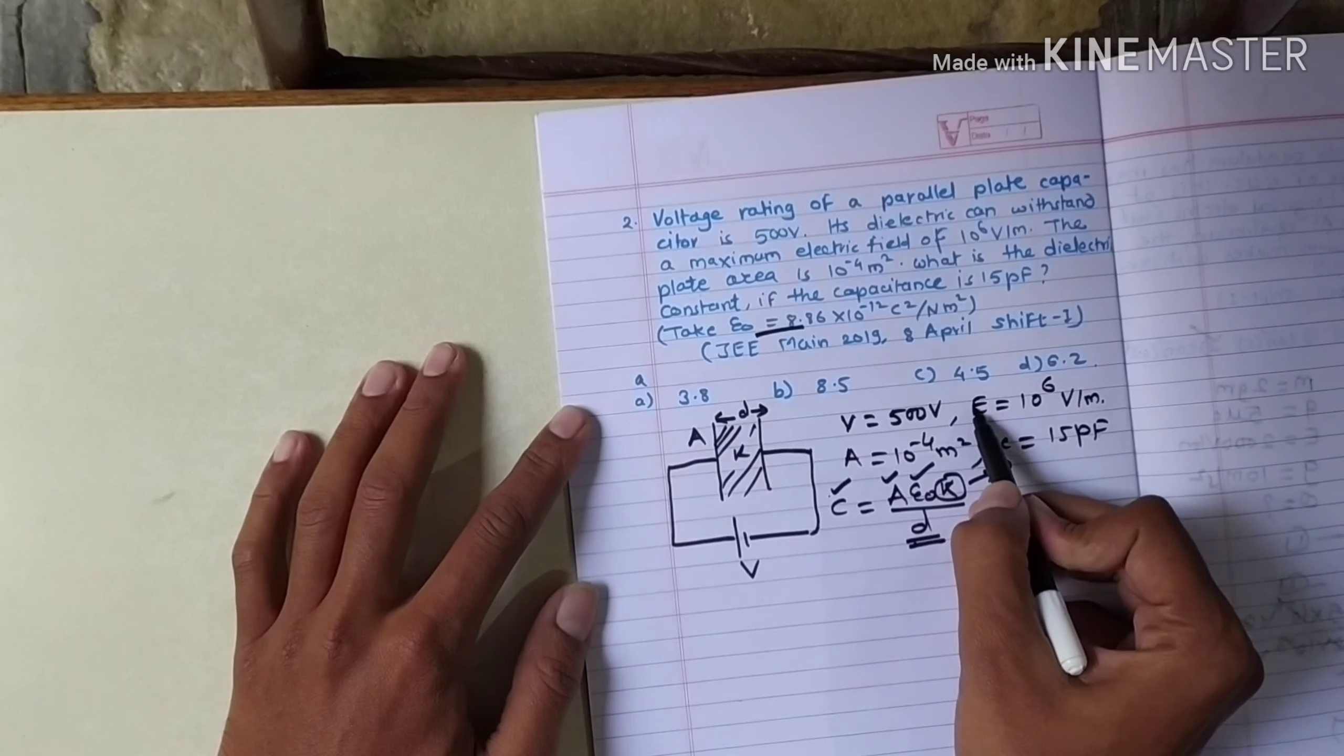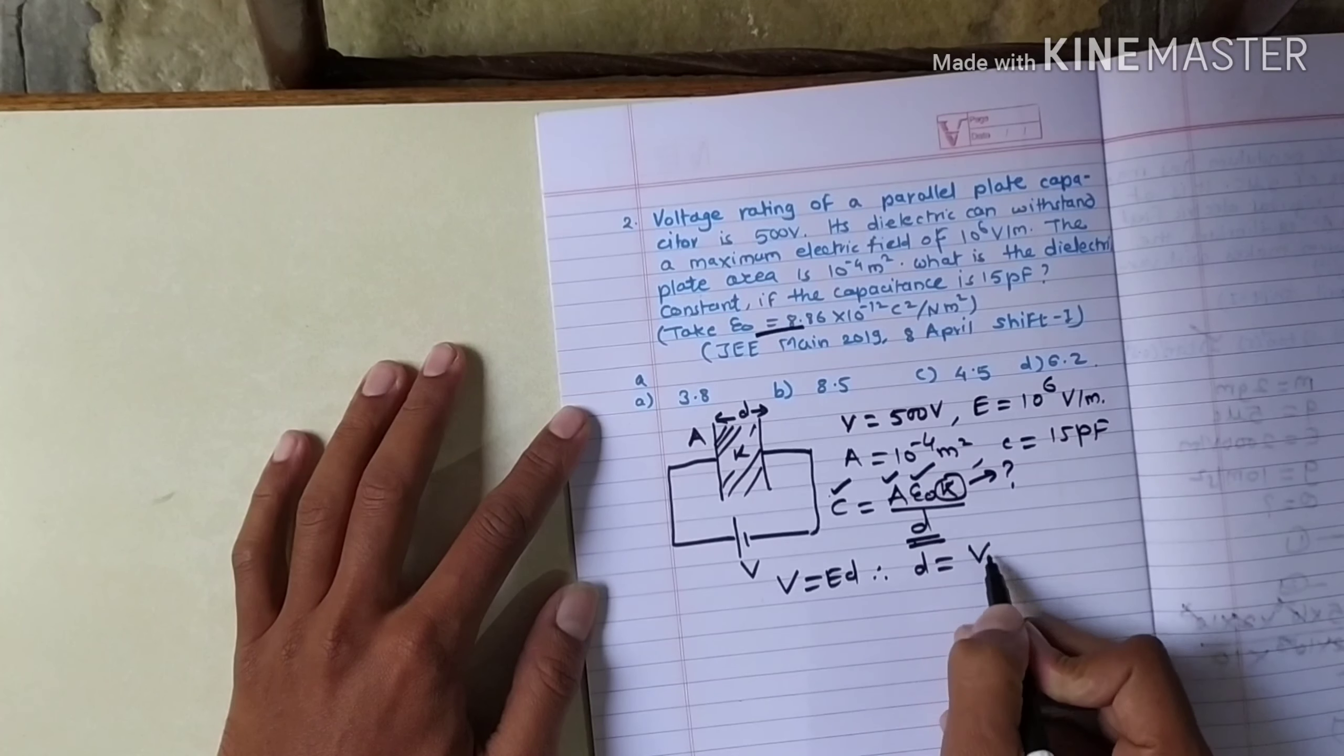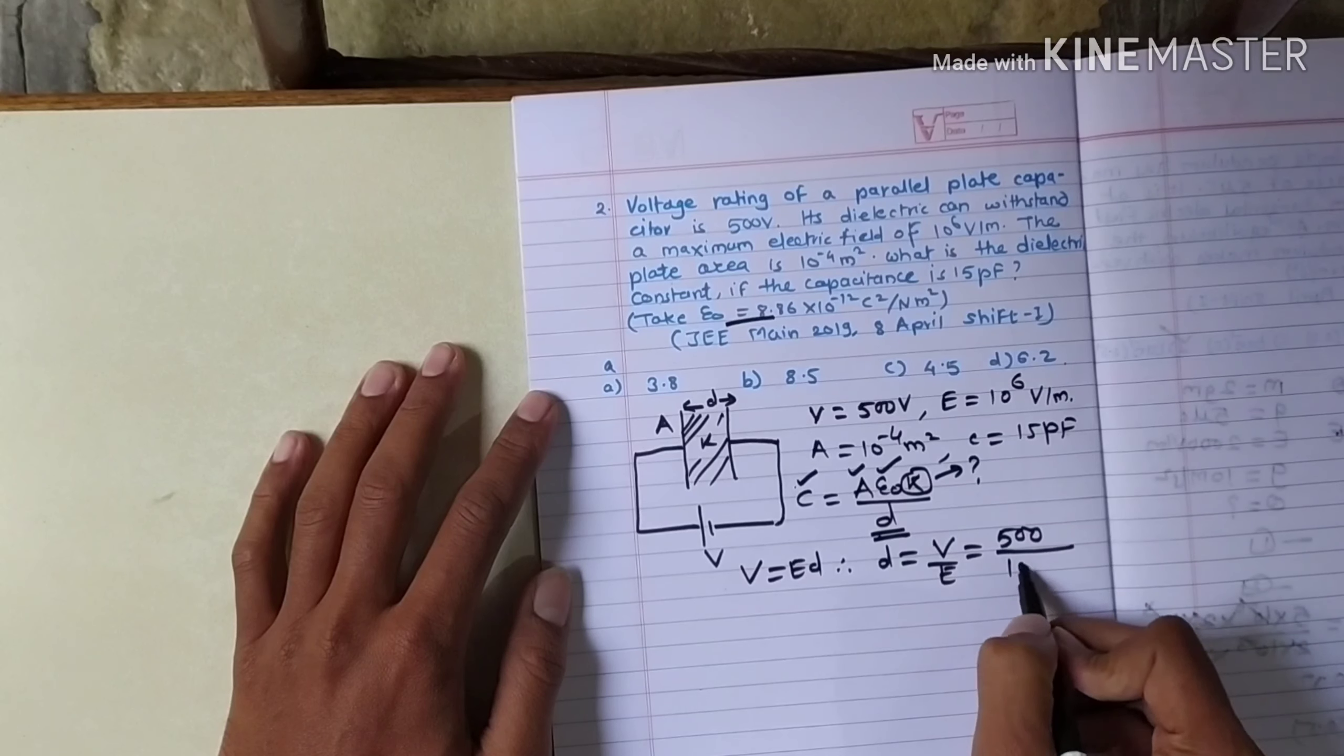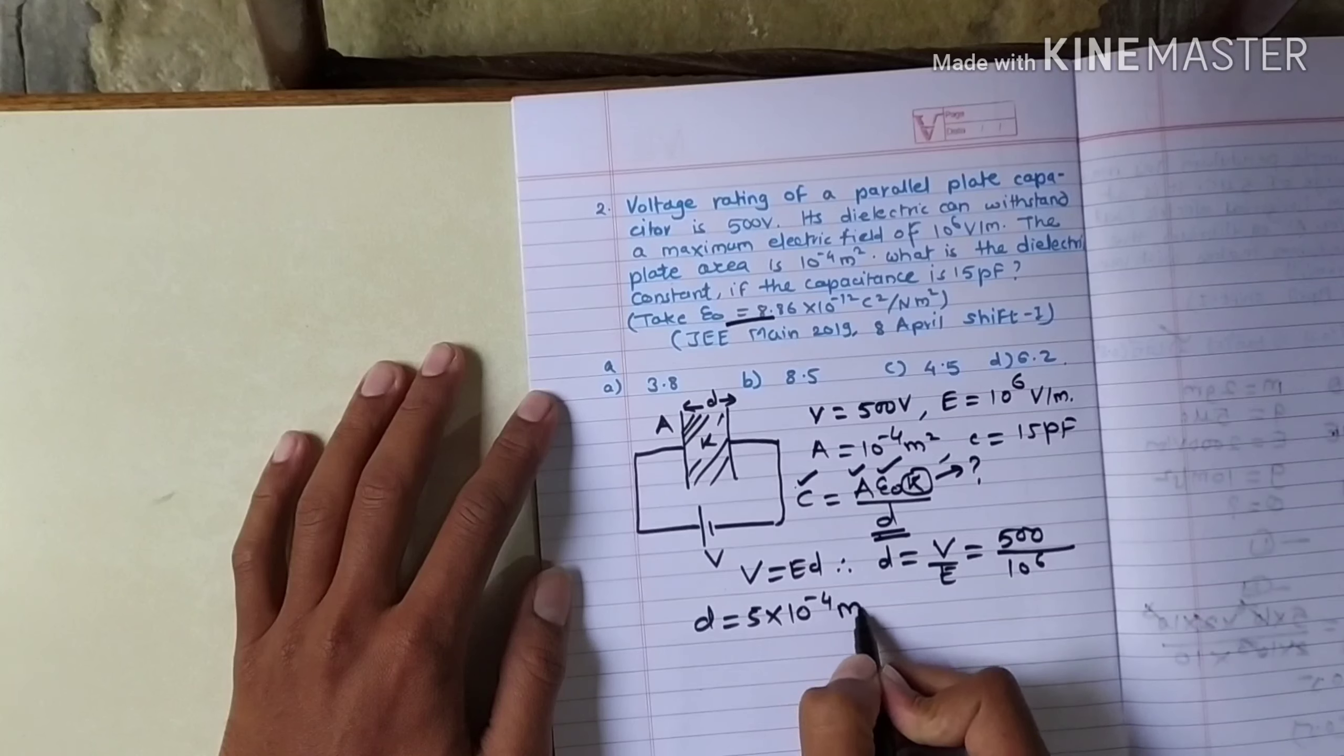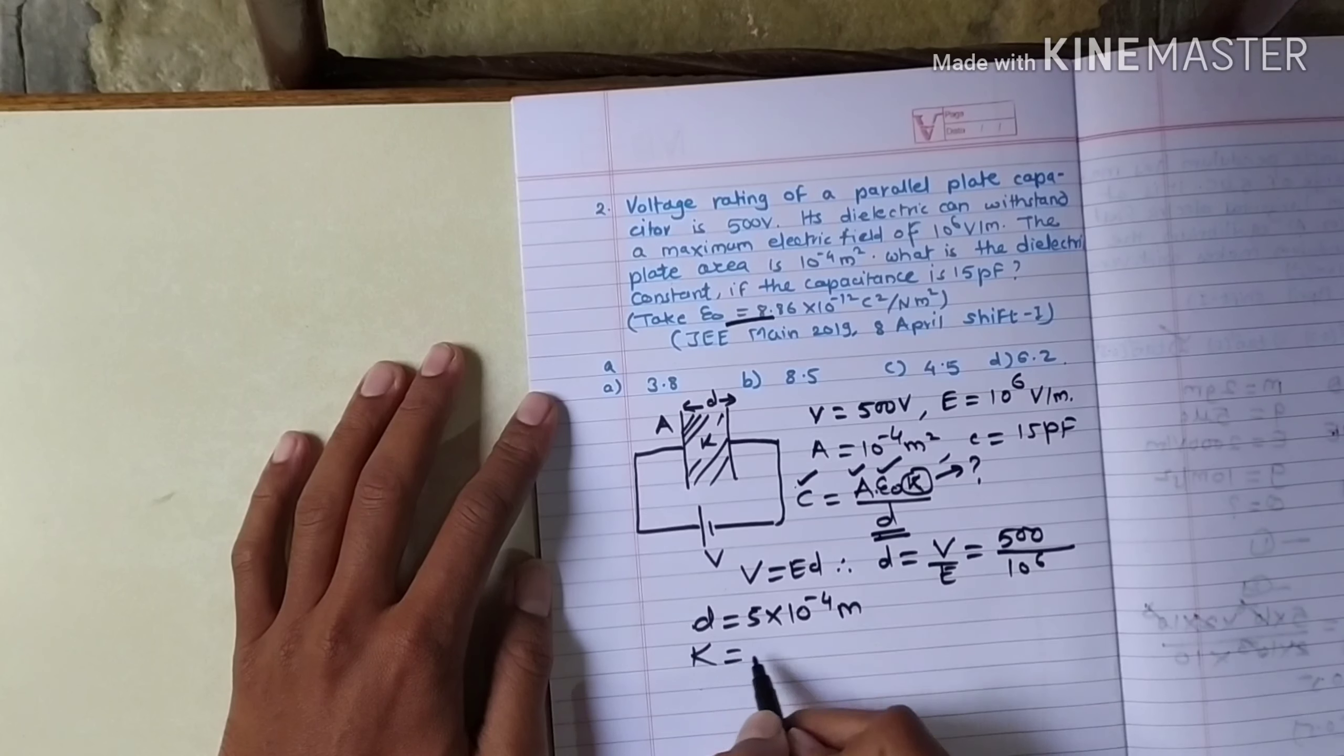One is potential, second is electric field. So the formula says V is equal to E into d, meaning d is equal to V divided by E. Here, the potential is 500 volts. Electric field is 10 raised to 6. So we get d which comes out to be 5 into 10 raised to minus 4 meters. Now, the value of d we substitute in capacity. k will be equal to c into d divided by A epsilon zero.